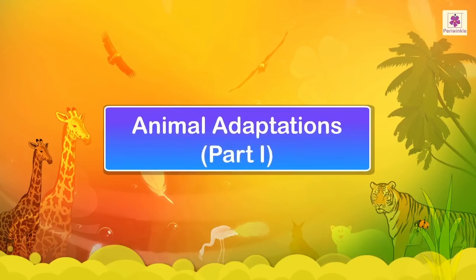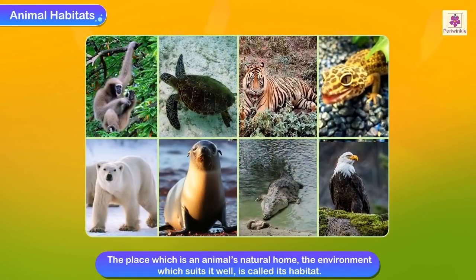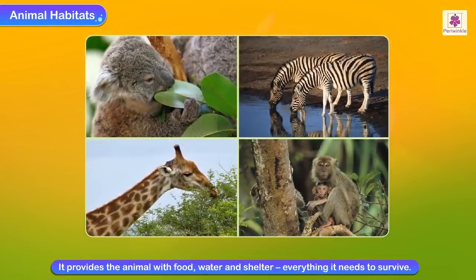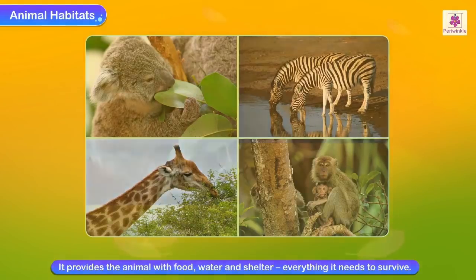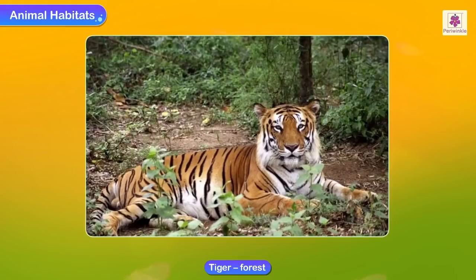Animal adaptations and animal habitats. The place which is an animal's natural home, the environment which suits it well, is called its habitat. It provides the animal with food, water and shelter — everything it needs to survive. For example, a tiger's natural home or habitat is the forest.